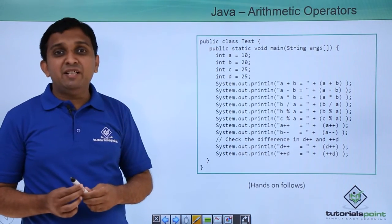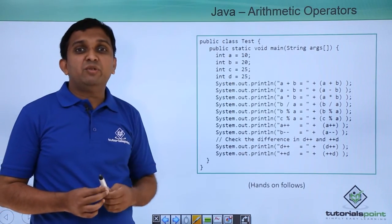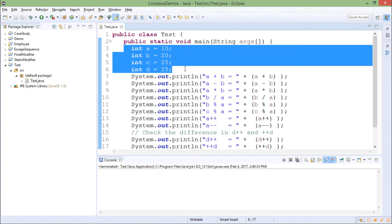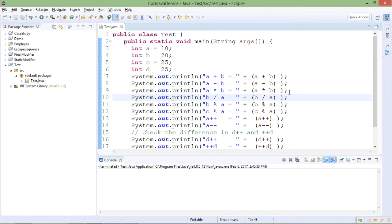Let us implement this program practically so that we can cross-check. To demonstrate arithmetic operators, I have taken one Test class. Main method is implemented. There are four variables a, b, c, d with values 10, 20, 25, 25 respectively. Now I am printing few outputs like a+b, a-b, a*b, b/a, b mod a, c mod a, a++, a--, d++, and ++d.